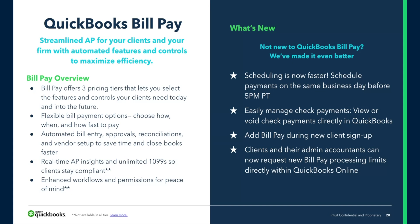We offer three pricing tiers with BillPay today — Basic, Premium, and Elite — letting you select the right features and controls to meet your client's needs at the price point you select. Our Basic tier is $0 per month with five free ACHs, great for testing the product. Premium offers 40 free ACHs per month as well as unlimited 1099 filing for your 1099 vendors. For larger organizations, Elite offers enhanced workflows, roles and permissions, unlimited no-fee ACH, at $90 a month. As a Pro Advisor, you also get Pro Advisor preferred pricing, which includes 30% off subscription fees and 15% off transactions.